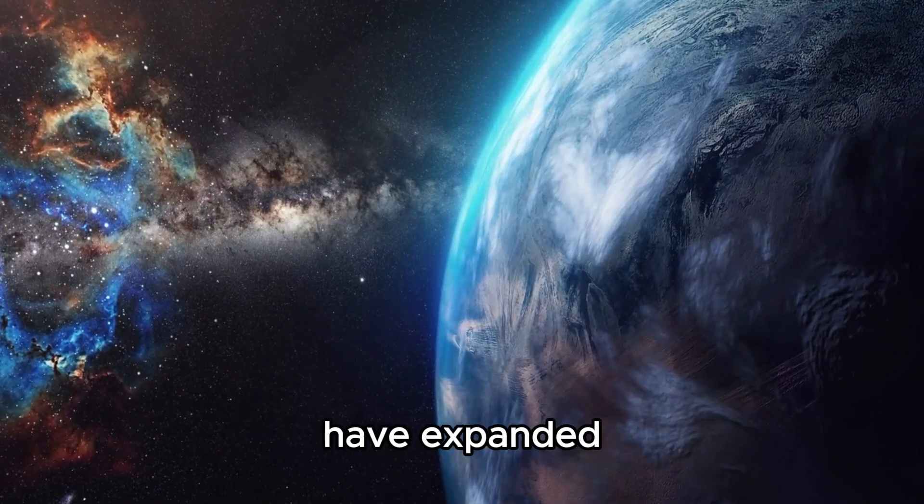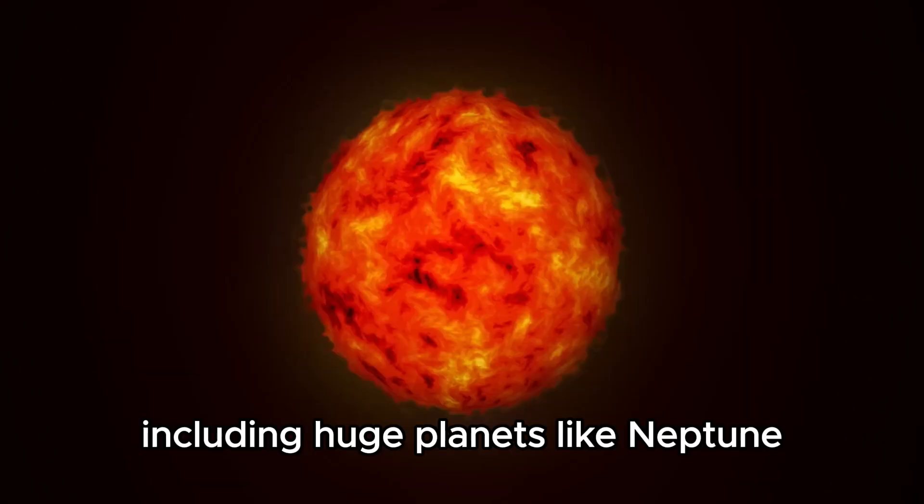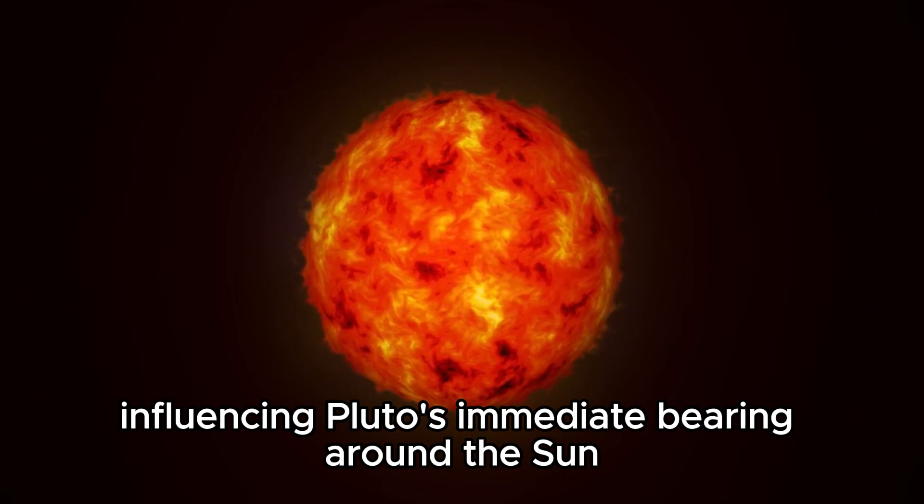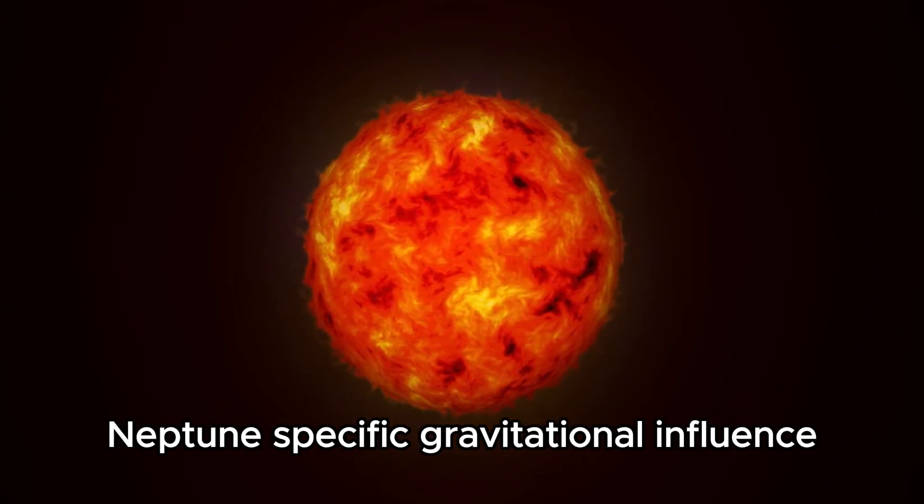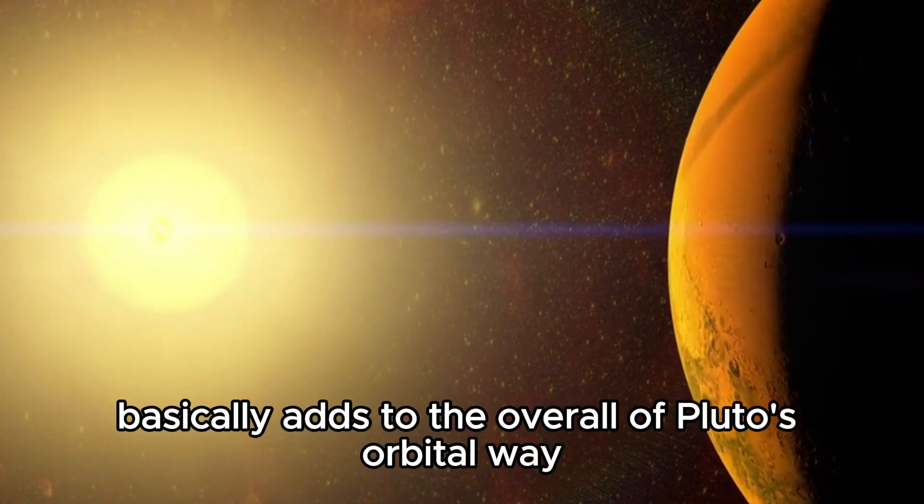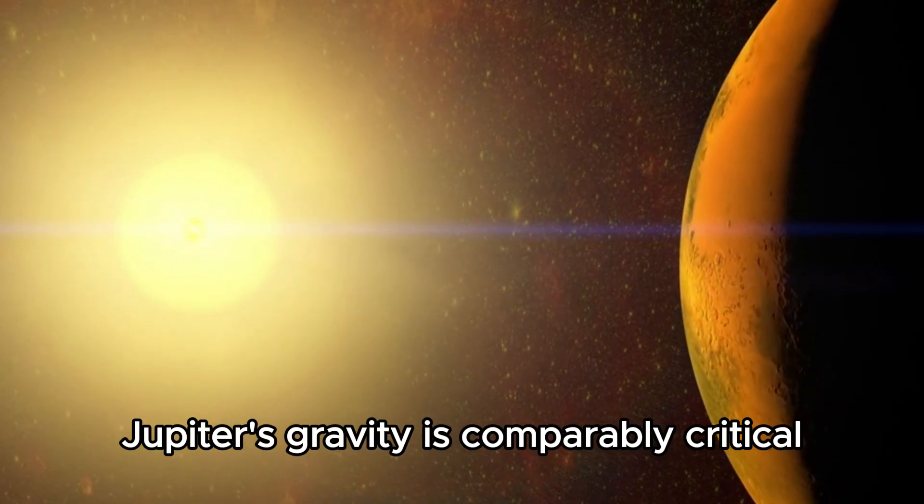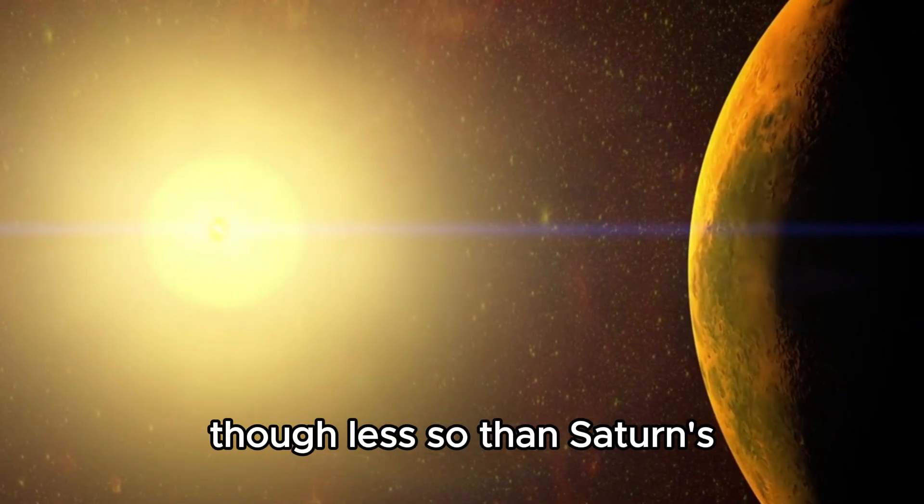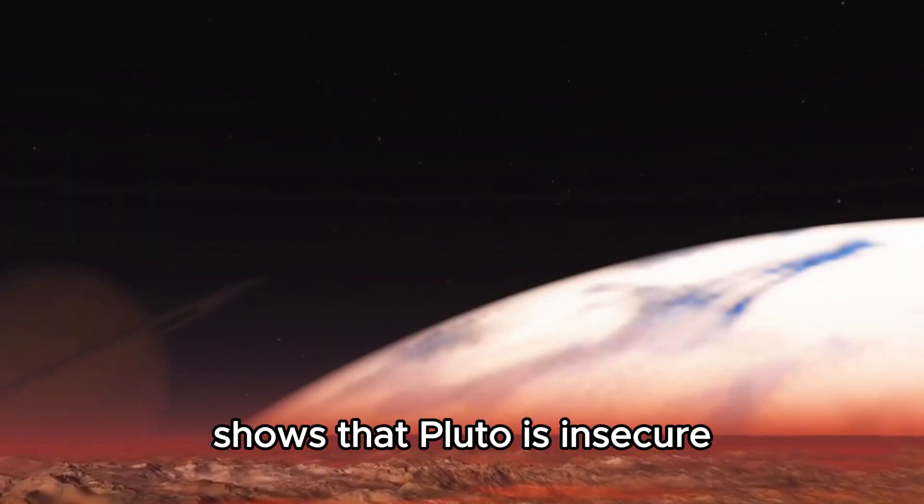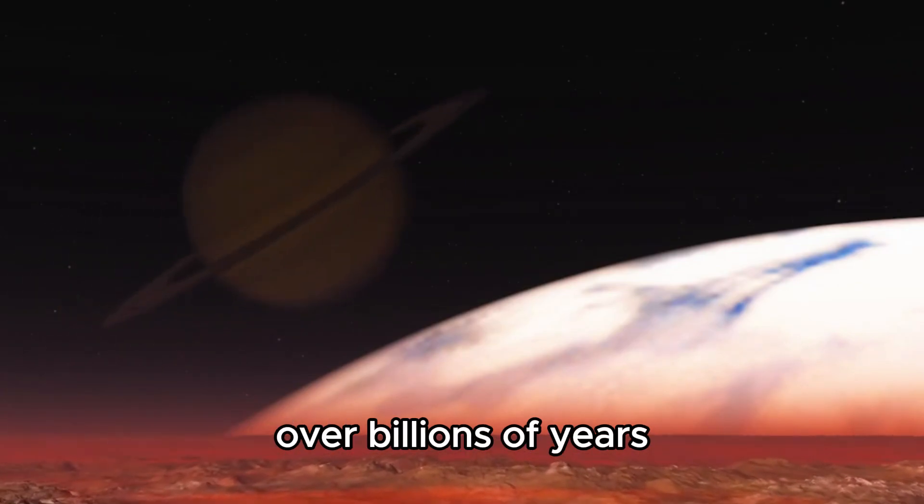Late virtual encounters have expanded our impression of the dispersed components, including huge planets like Neptune, Jupiter, Saturn, influencing Pluto's immediate bearing around the Sun. Neptune's specific gravitational influence, completing three circles for every two of Pluto, basically adds to the overall of Pluto's orbital way. Jupiter's gravity is comparably critical, though less so than Saturn's. Taken as a whole, this huge number of perceptions shows that Pluto is in secure and reliable development across space over billions of years.